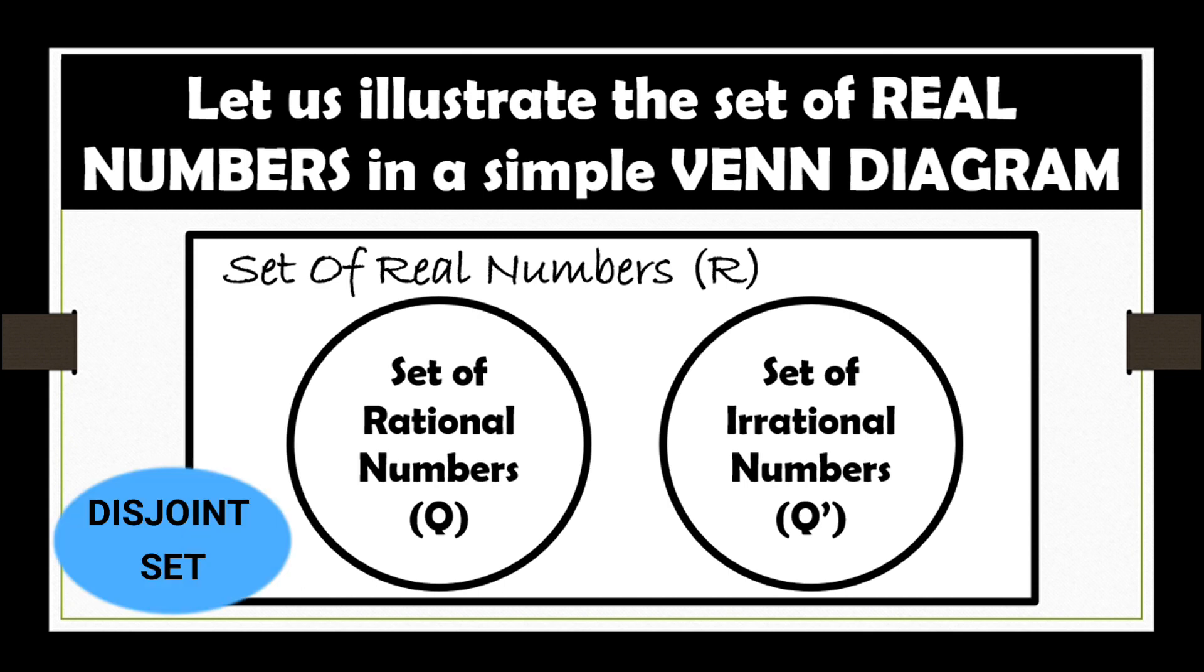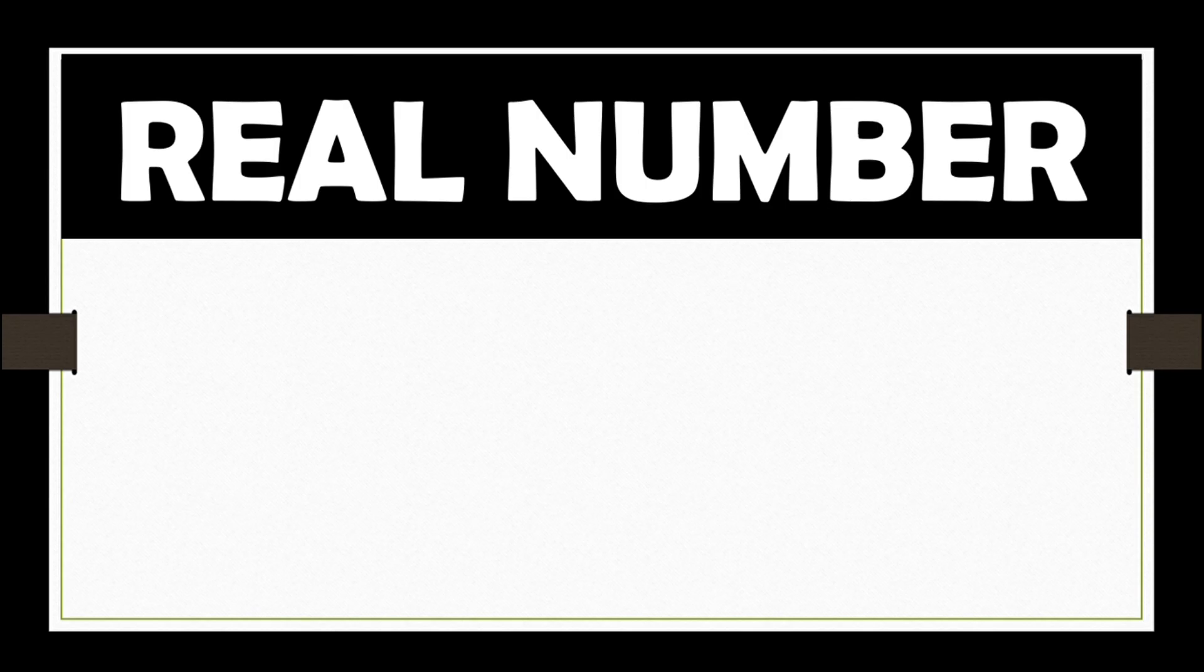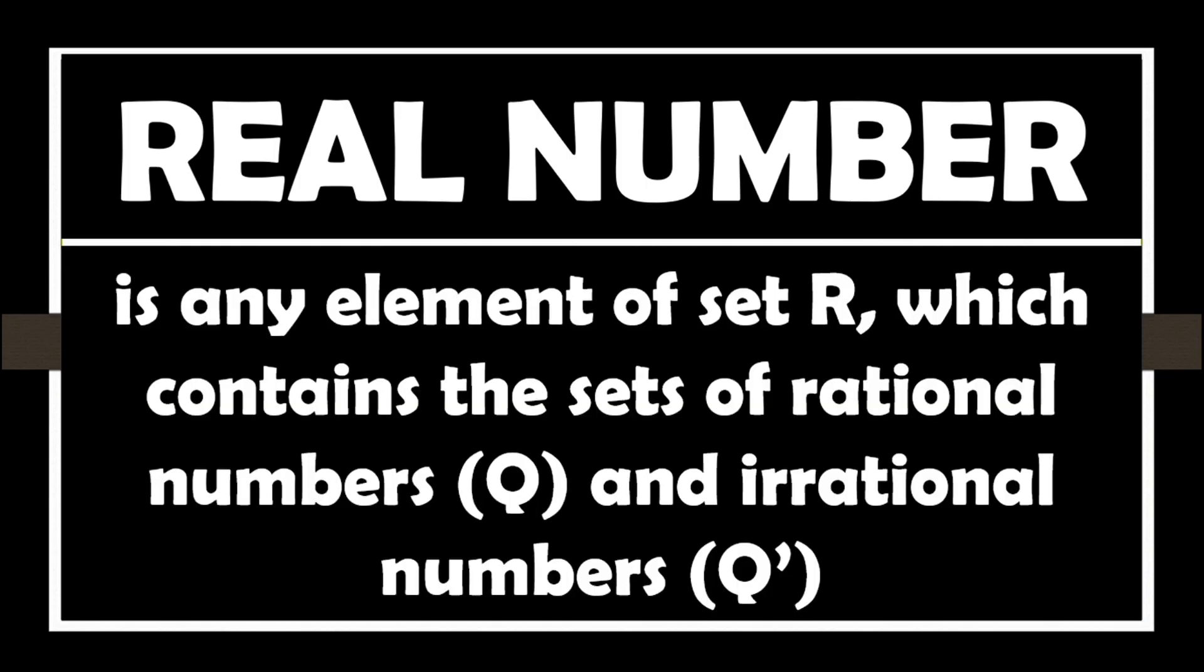This is a disjoint set. So, let us try to find out later why this set of real numbers is illustrated in this kind of Venn diagram. So, let's define first real number. It is any element of set R which contains the sets of rational numbers Q and irrational numbers Q'.